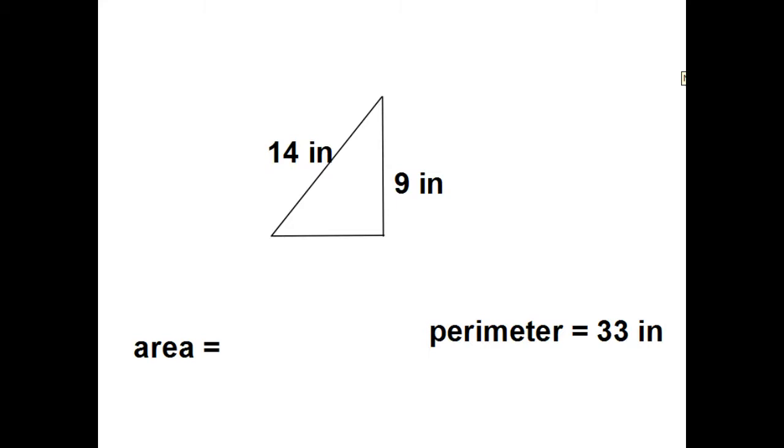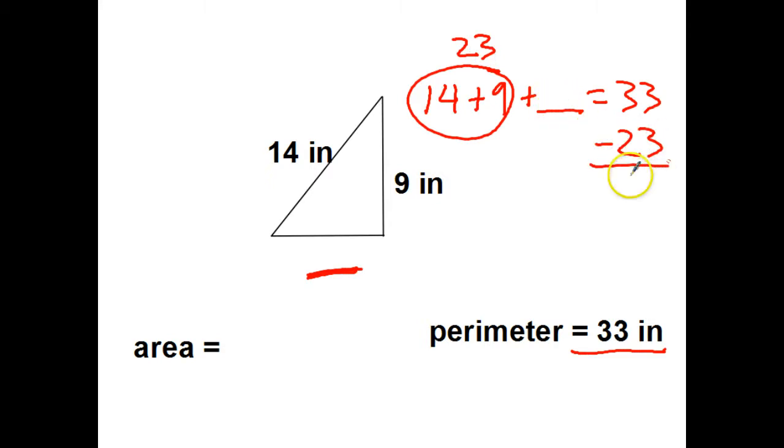This time the problem is a little bit different. Notice I gave you the perimeter, but I'm missing the side right here. So to get the perimeter, I should be doing 14 plus 9 plus the missing side equals 33. So I'm going to add up the 14 plus 9. That's 23. So 23 plus something equals 33. So I really need to do 33 minus 23. And I get 10. So this side right here is 10 inches.